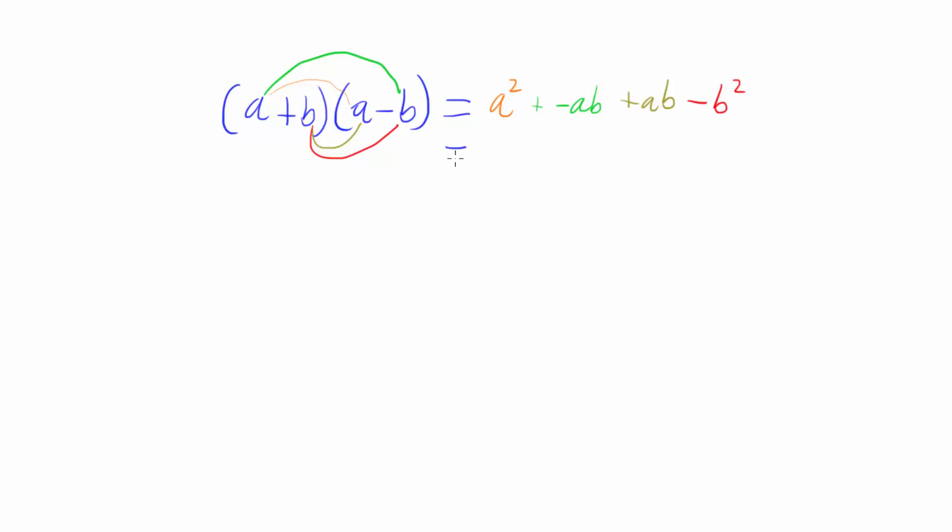If we simplify this, we'll end up with a squared, and these two in the middle cancel out because negative ab plus ab cancels each other out. So that means we're just left with a squared minus b squared.